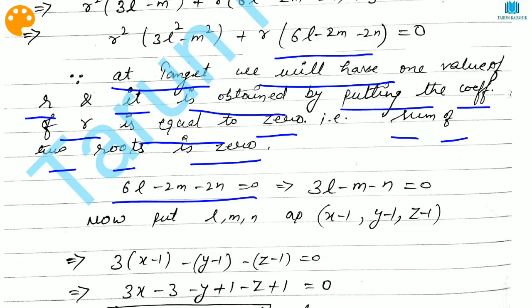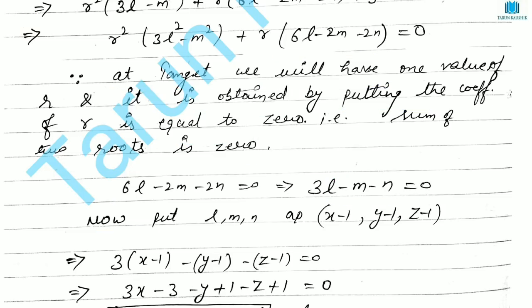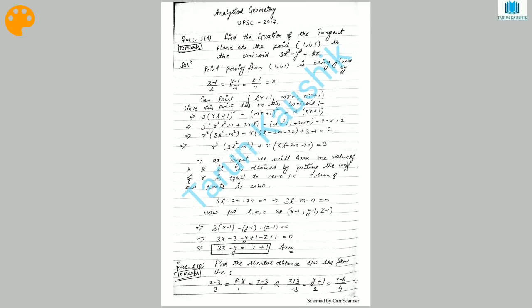Taking 2 as common, we simplify that condition. Now we eliminate L, M, N from this equation because these are direction cosines. Since L corresponds to (x-1), just replace L, M, N by (x-1), (y-1), and (z-1). After doing simple calculation, you get the equation of the tangent plane. This was the first question in the UPSC 2017 Mains paper, worth 10 marks.